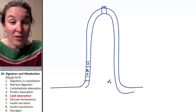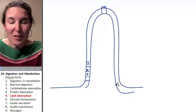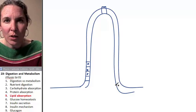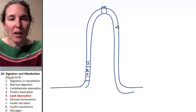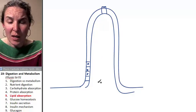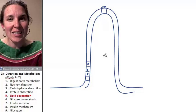Microvilli are found on individual cells. Villi are finger-like projections made up of multiple epithelial cells and other stuff because you have lamina propria that you actually have inside of here.